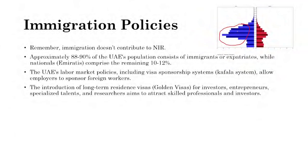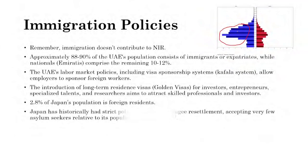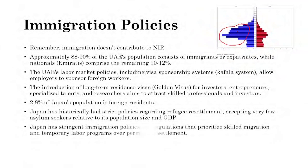The UAE's labor market policies include a visa sponsorship system making it easy for companies to get foreign workers. They offer long-term residence 'golden visas' for investors, entrepreneurs, specialized talents, and researchers, attracting skilled professionals. By contrast, only 2.8% of Japan's population are foreign residents. Japan has historically had very strict immigration policies — it accepts very few asylum seekers, prioritizes highly skilled temporary migration, and prefers temporary rather than permanent settlement.